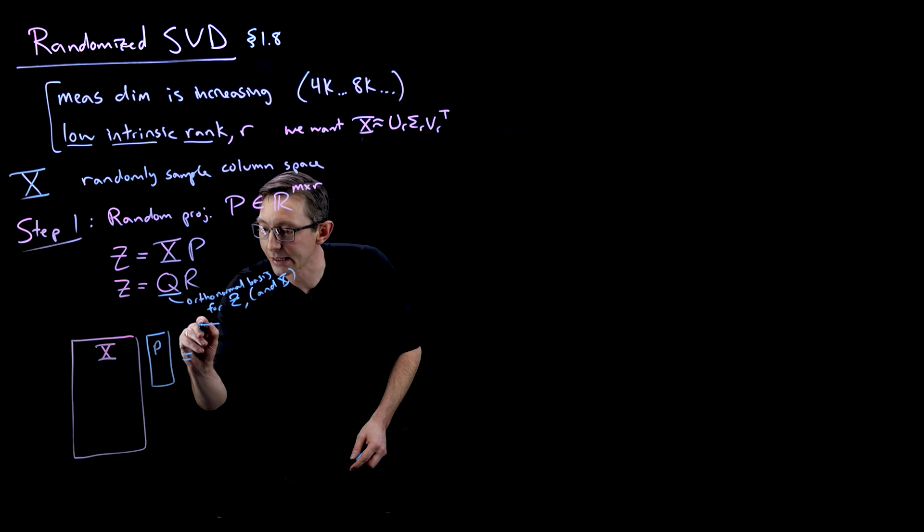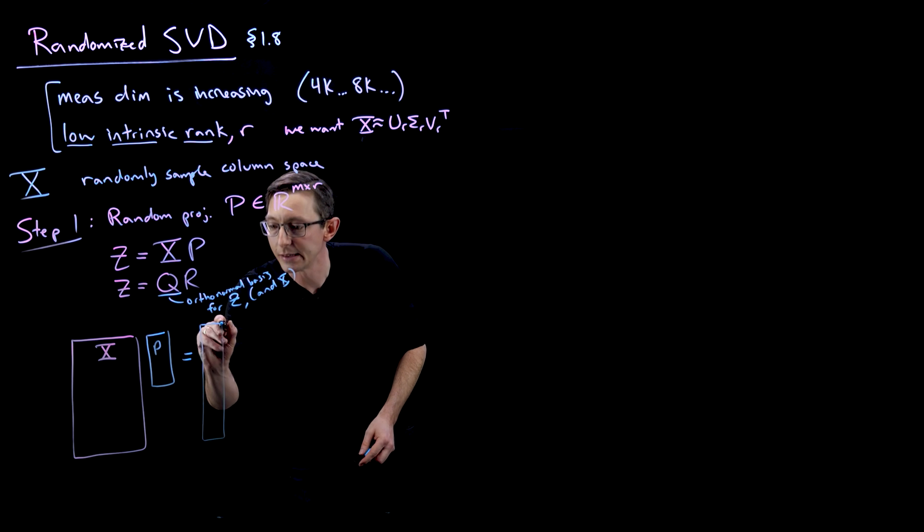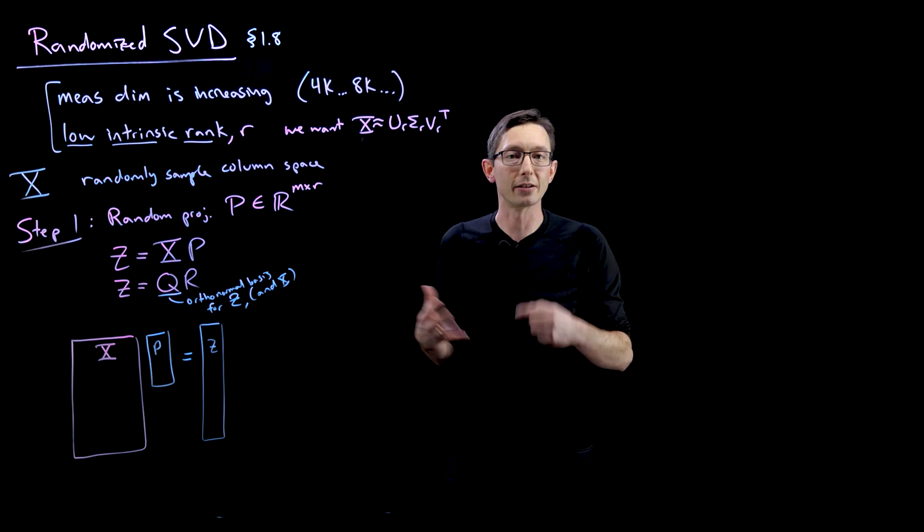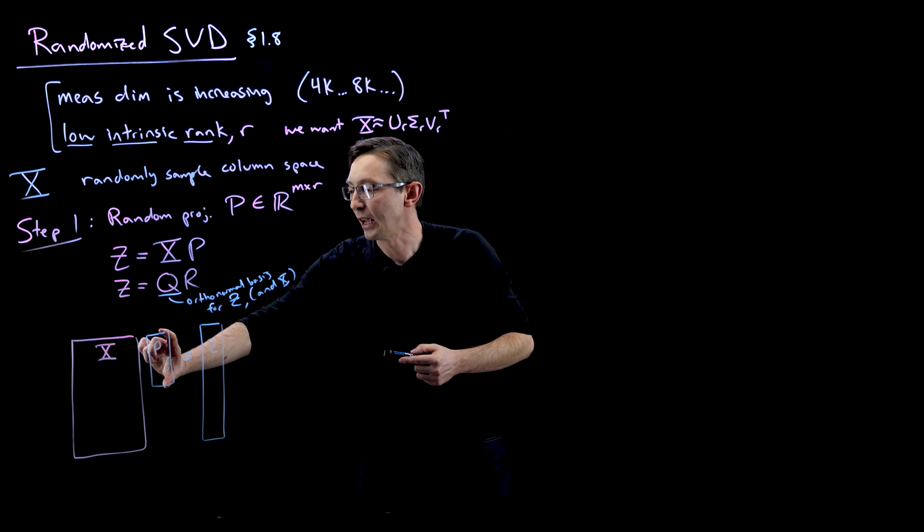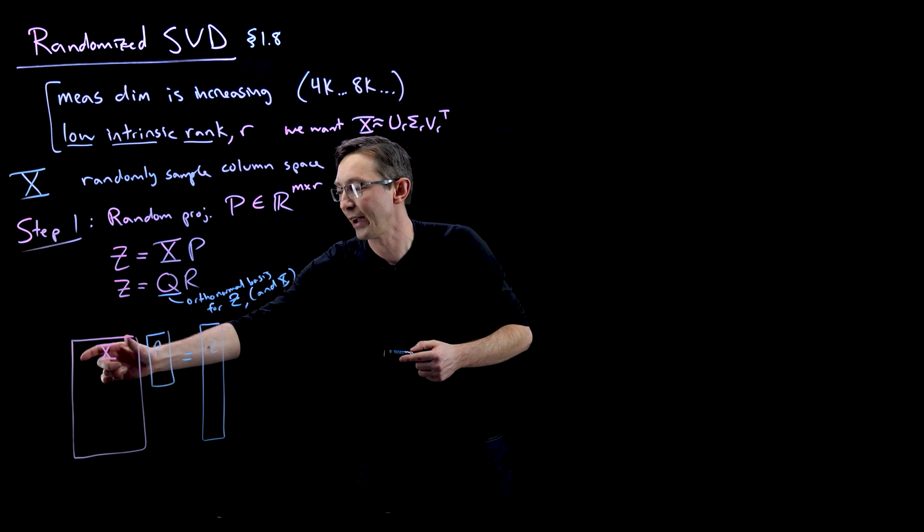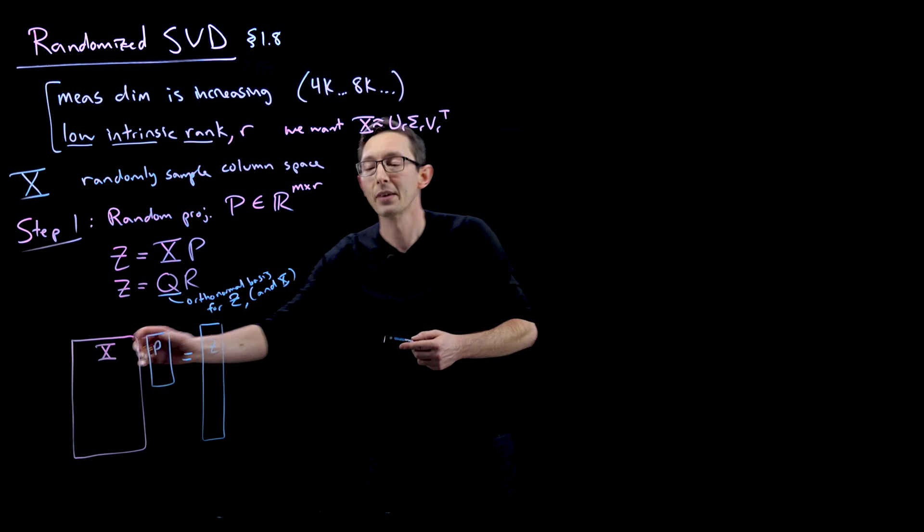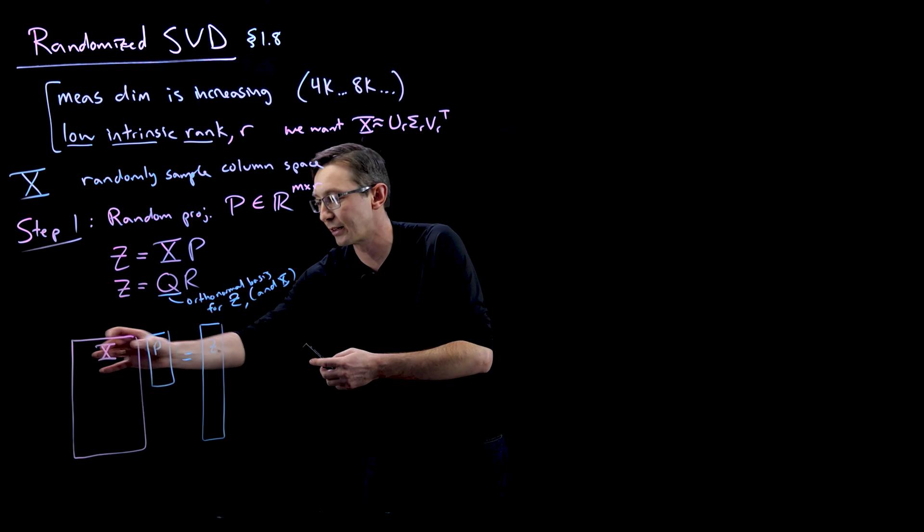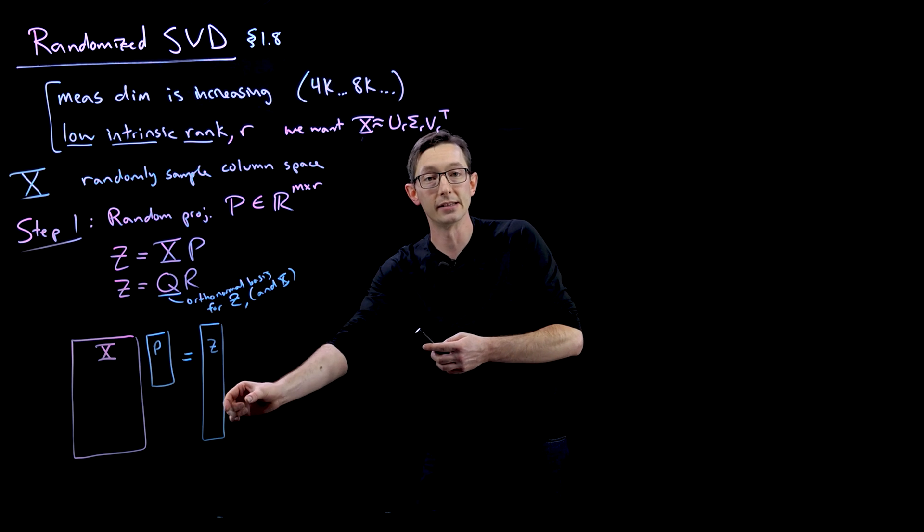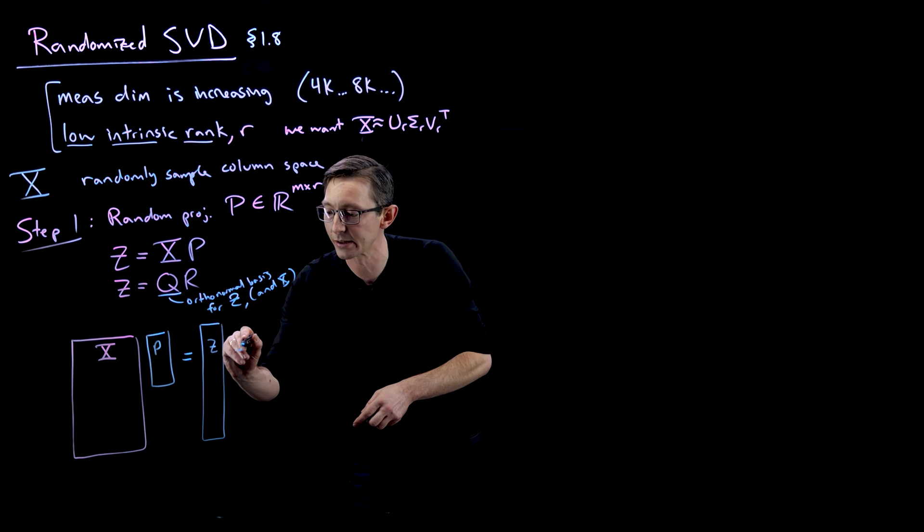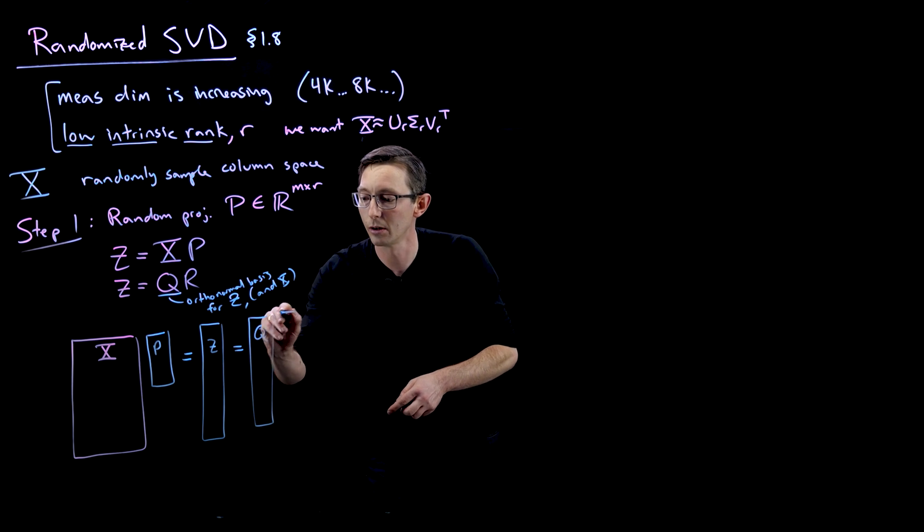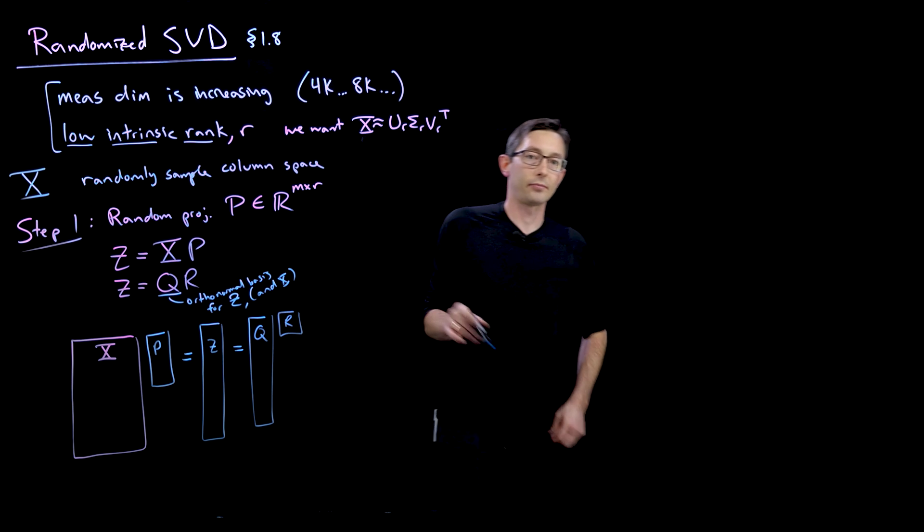And that's going to give me a skinny Z matrix that in principle, because of the properties of random vectors and high dimensional geometry, if I multiply this by a bunch of random vectors in the columns of P, I'm going to sample all of that column space of X. The dominant column space of X is going to be captured in Z. And then I can find an orthonormal representation for that column space using the QR factorization.